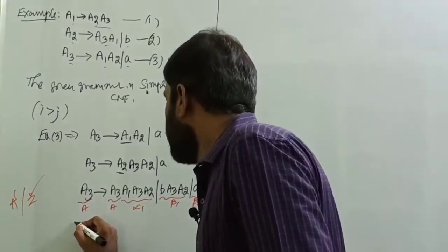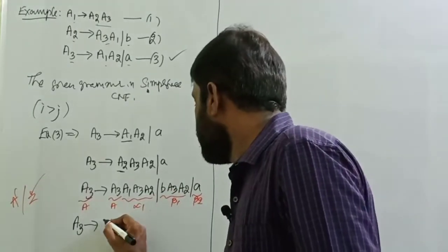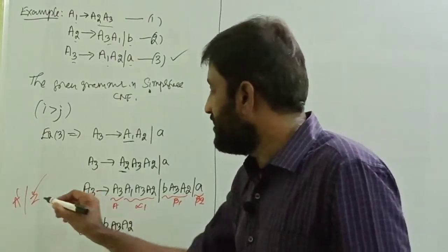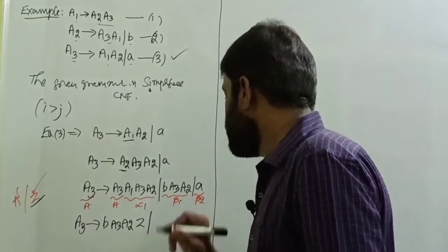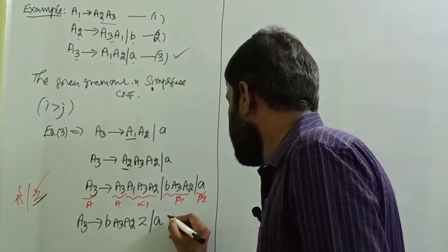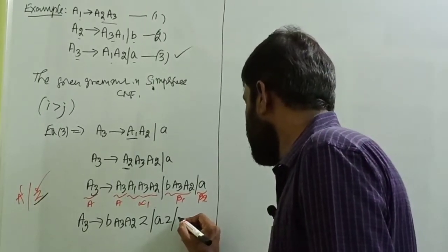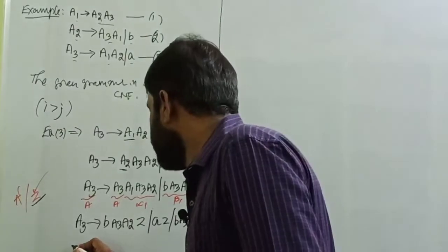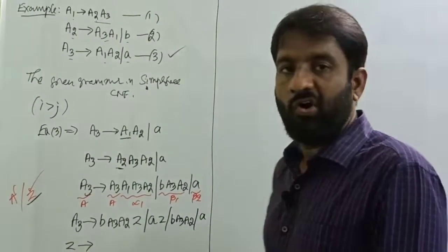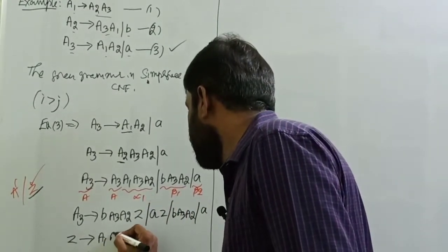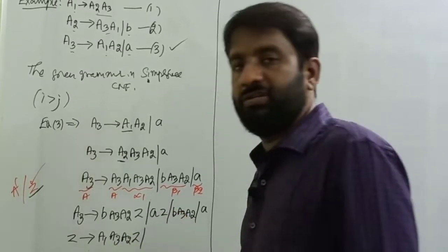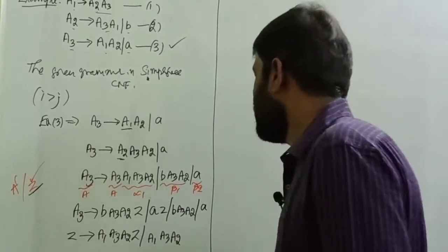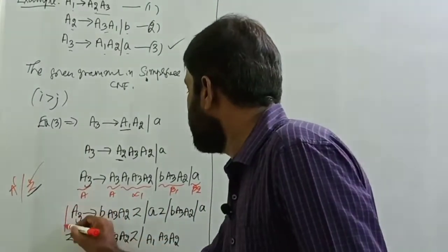After applying Lemma 2, A3 tends to b A3 A2 Z | a Z | b A3 A2 | a. And Z tends to A1 A3 A2 Z | A1 A3 A2. Now observe that A3 productions are converted into Greibach Normal Form.